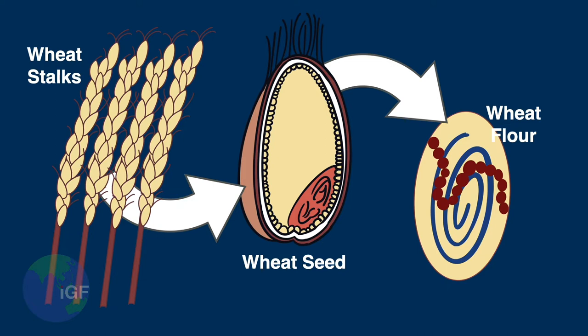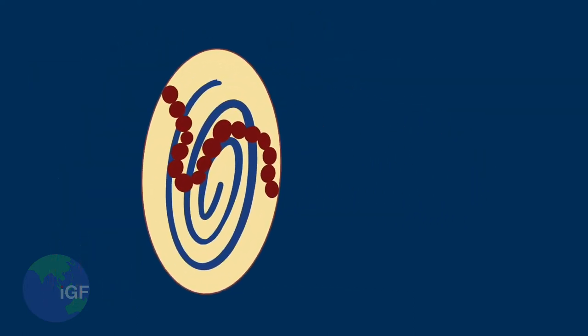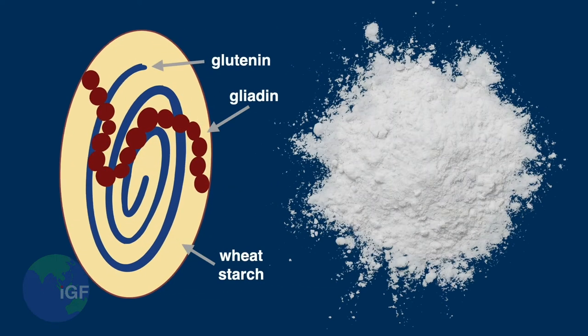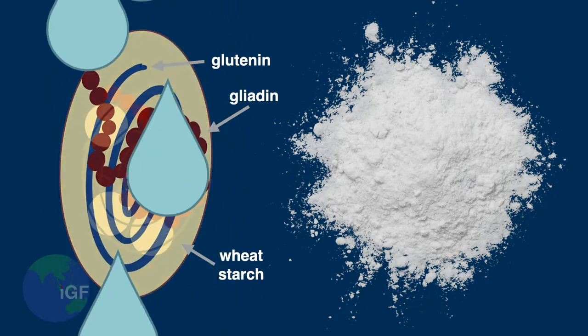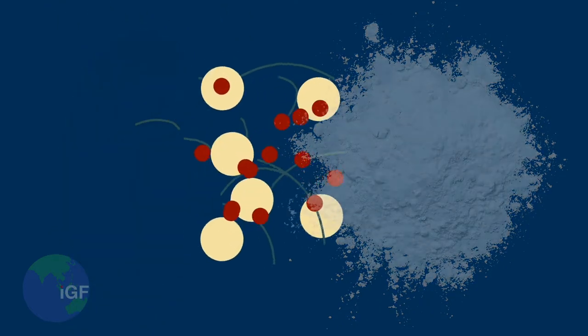If you could look into the tiny bits of wheat flour, you would find strands of gluten protein tightly wrapped around molecules of starch. There are two specific proteins — glutenin and gliadin — inside of the wheat seed. When the seeds are ground into flour, these two proteins stay tightly coiled around the dry starch. When liquid is added to wheat flour, the proteins begin to unwind and let go of the starch molecule.